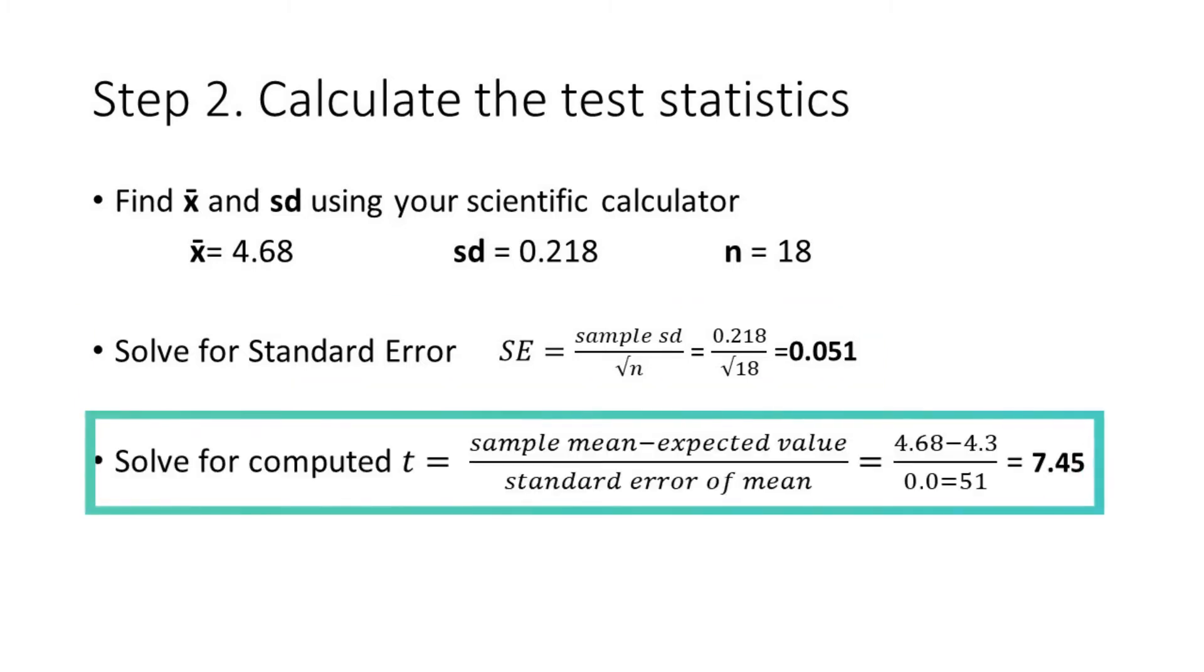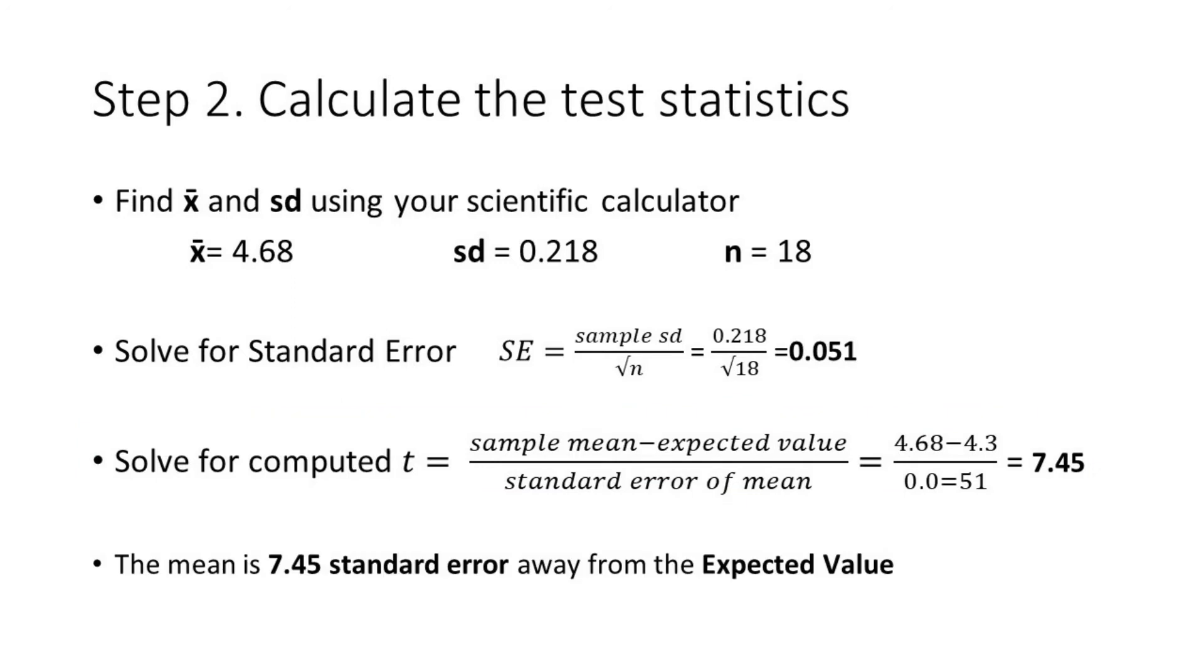After which, we find the computed t by subtracting the expected value from the sample mean divided by the standard error of the mean and we obtain 7.45. This implies that the sample mean is 7.45 standard errors away from the expected value.